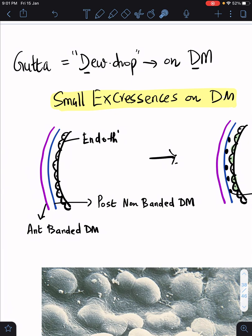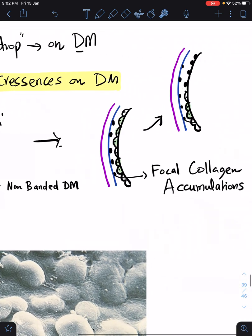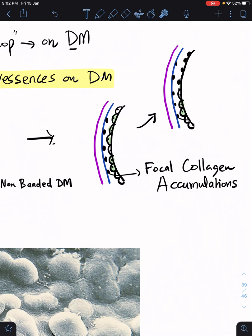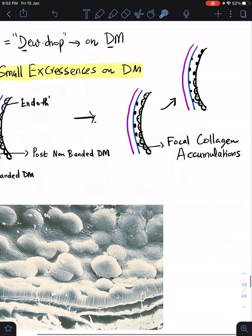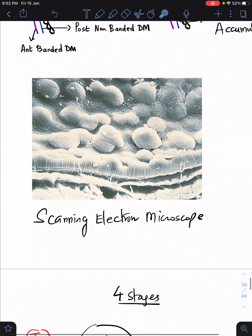This is the pathophysiology. This is the normal cornea, normal endothelium, and this is the Descemet membrane. Descemet membrane has two parts: anterior banded Descemet membrane and posterior non-banded Descemet membrane. Whenever the Descemet membrane is abnormal, either in terms of quality or quantity, reduction of endothelium or abnormal endothelium cells are going to secrete focal collagen accumulations. This is scanning electron microscope picture showing the multiple excrescences, multiple deposits on the endothelium.